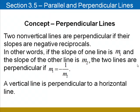Two non-vertical lines are perpendicular if their slopes are negative reciprocals. In other words, if the slope of one line is M1 and the other is M2, the two lines are perpendicular if M1 equals the opposite of 1 over M2. Regarding a vertical line, a vertical line is perpendicular to a horizontal line.